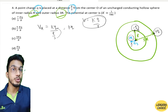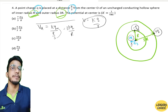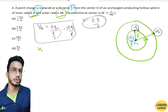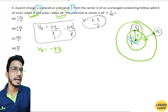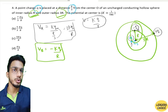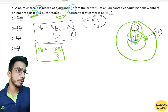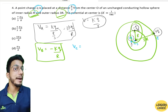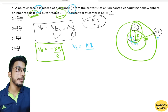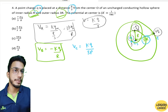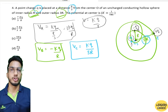Next, V_B is the potential due to the induced −q charge on the inner surface at radius r from center. So V_B = −kq/r. Then V_C is the potential due to the induced +q charge on the outer surface at radius 3r from center. So V_C = +kq/3r.